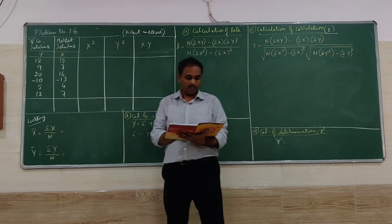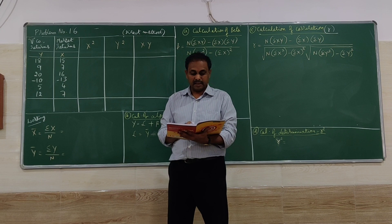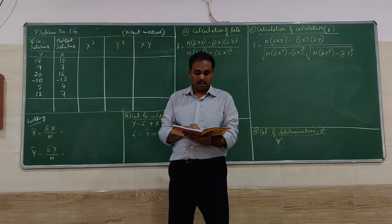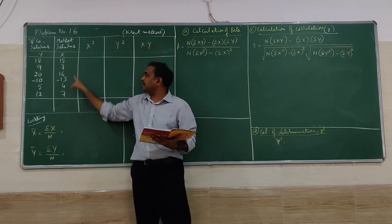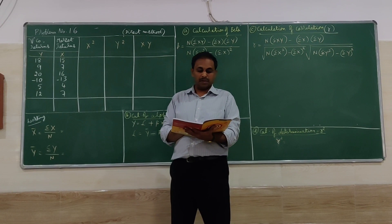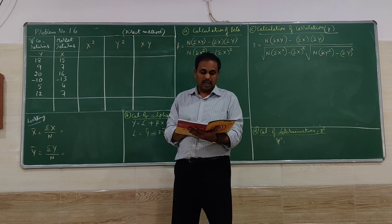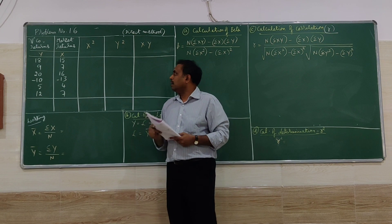Problem number 16 is similar to problem number 15 but with an extra adjustment. The following data refers to market returns on V Company Limited script return for a particular period. We need to determine the beta coefficient, alpha coefficient, coefficient of correlation, coefficient of determination, and the new addition here: systematic risk.